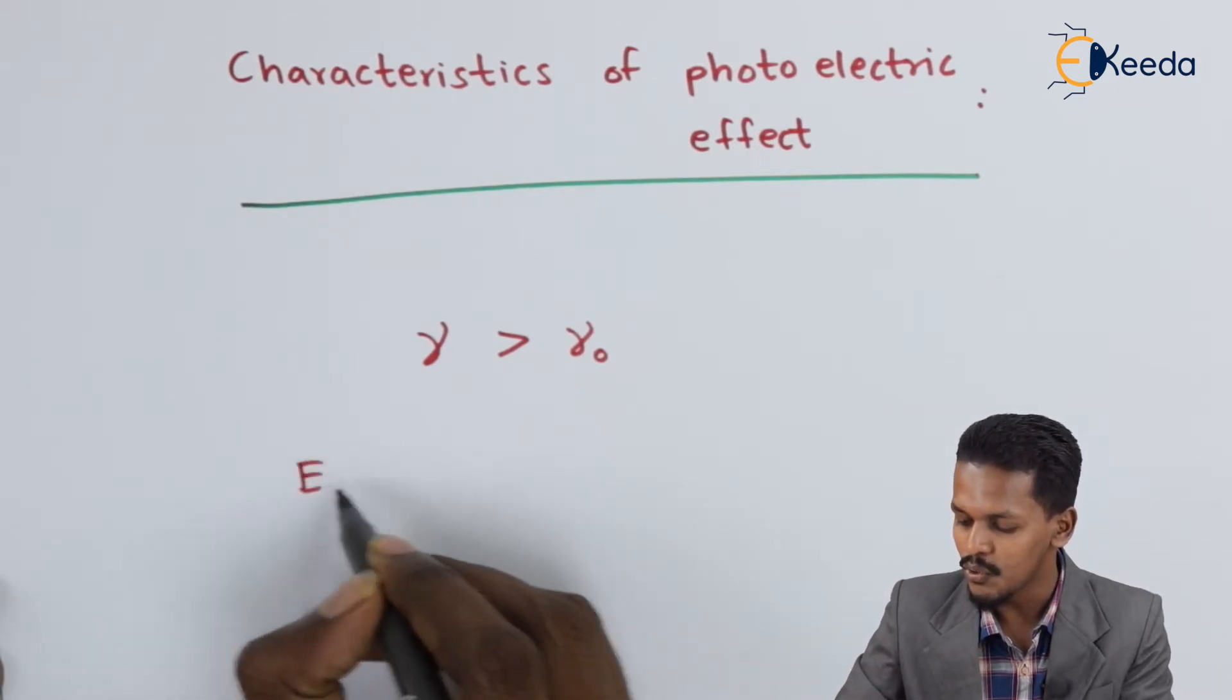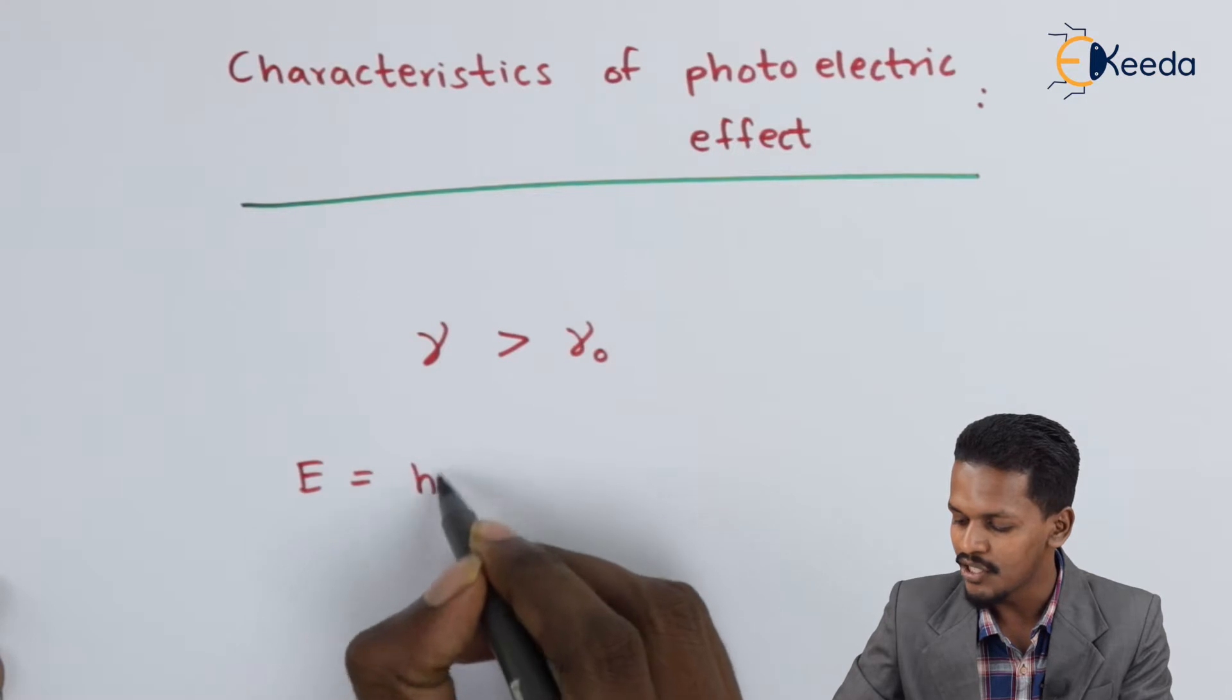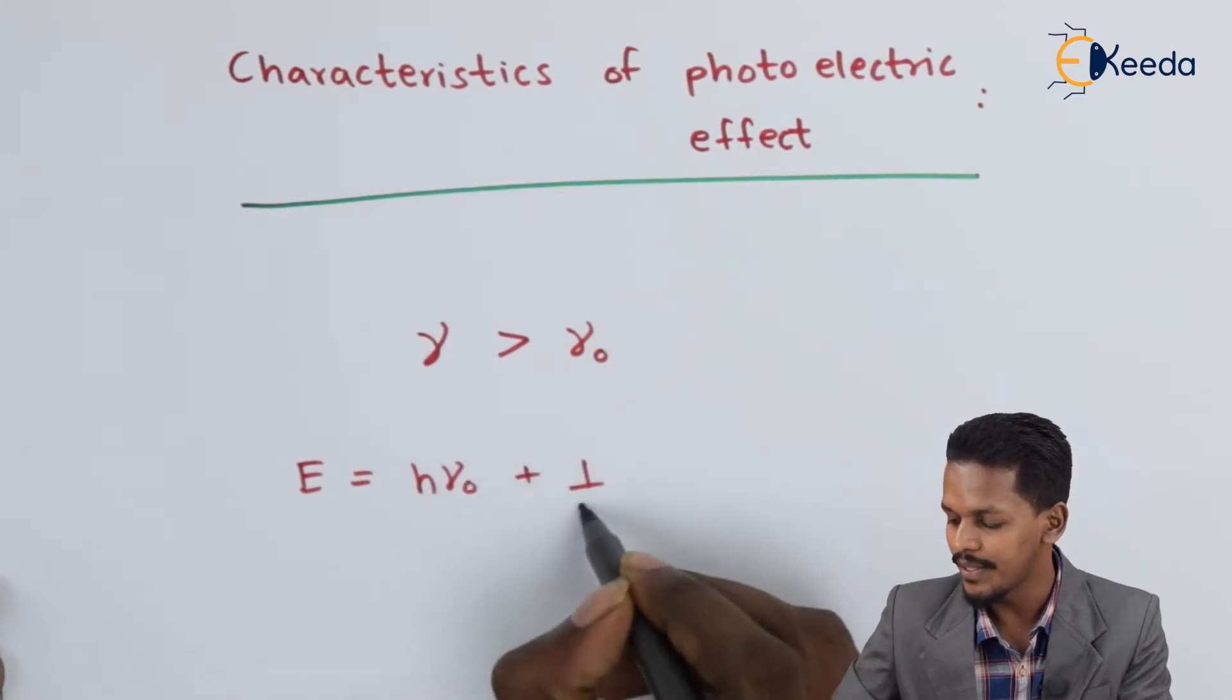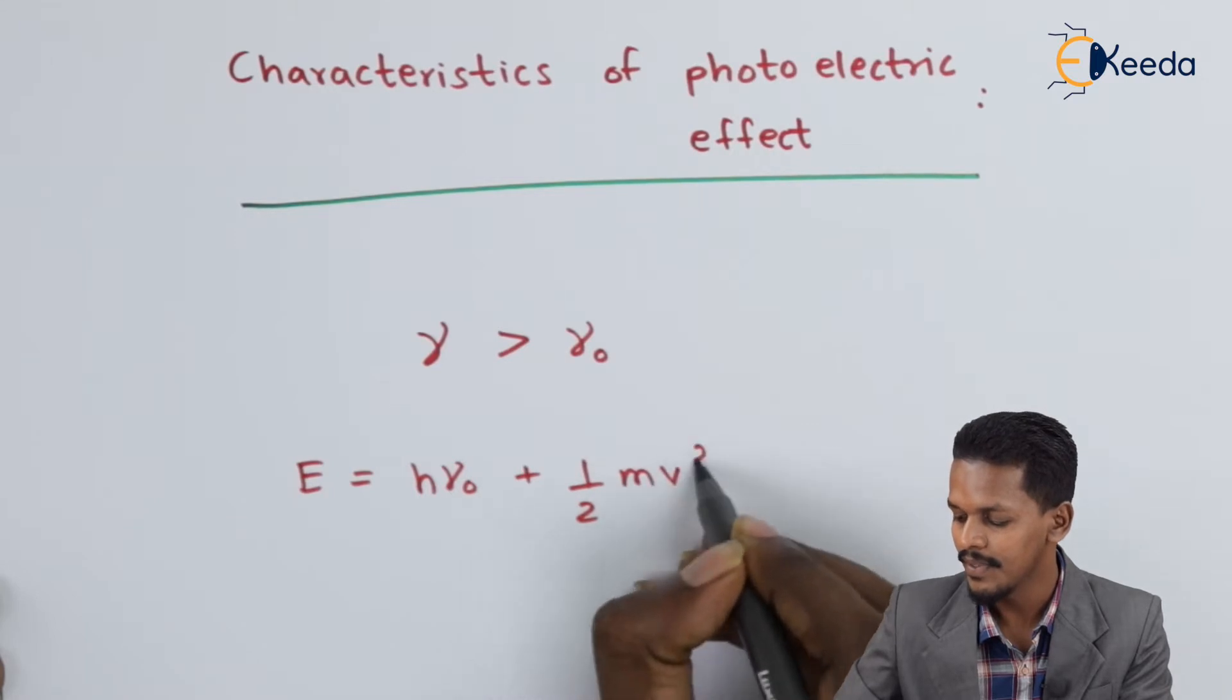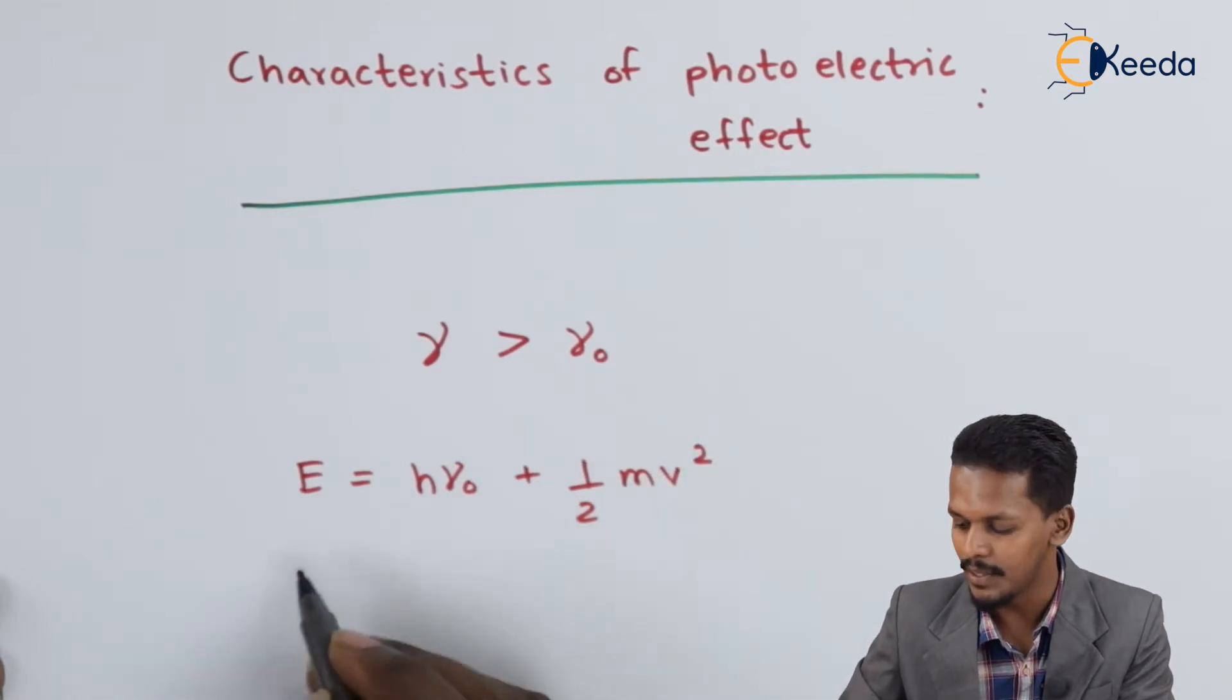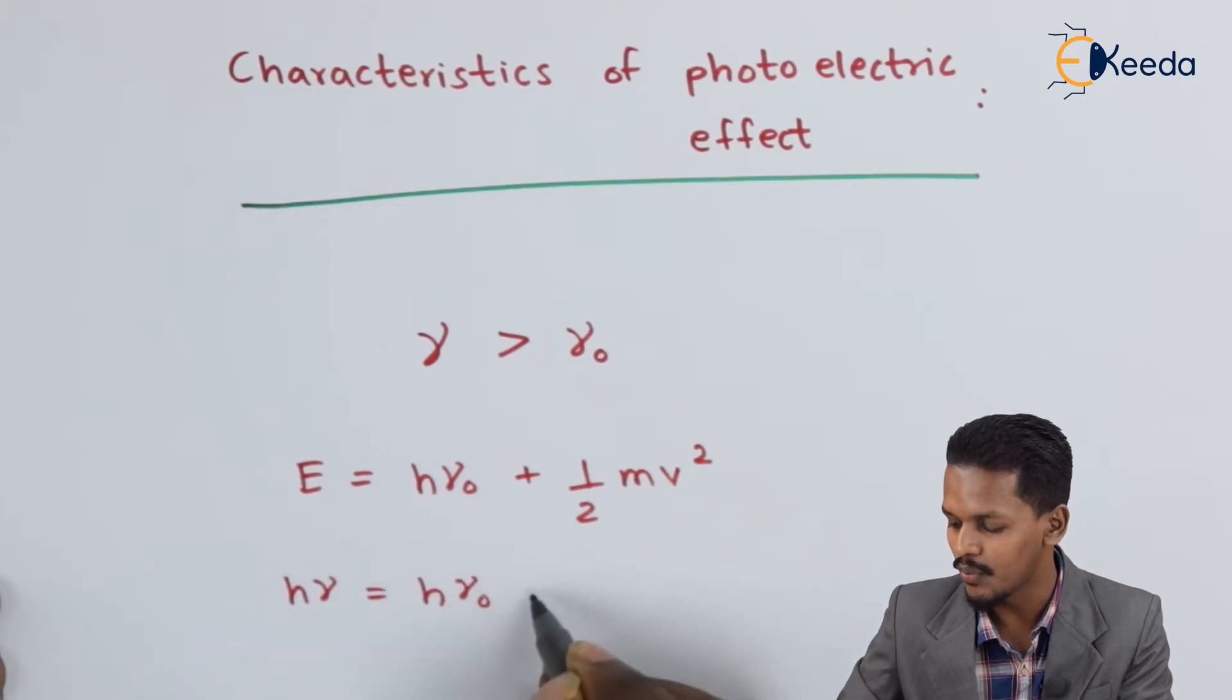E equals h nu not plus half mv squared, and E is the energy of the incident beam, which is h nu. Therefore, this is the equation that we have here.